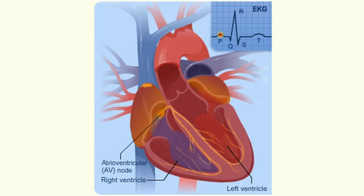The signal arrives at the atrioventricular, or AV node, near the ventricles. Here it is slowed for an instant to allow your heart's right and left ventricles to fill with blood. On an EKG, this interval is represented by the start of the line segment between the P and Q wave.